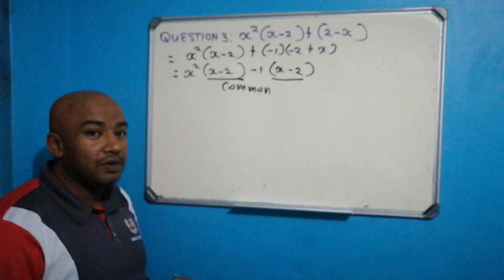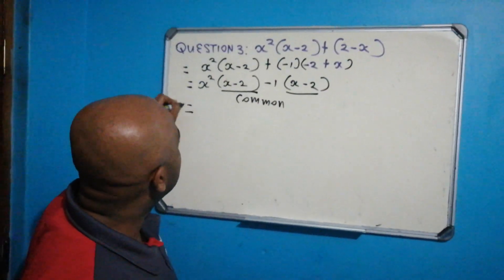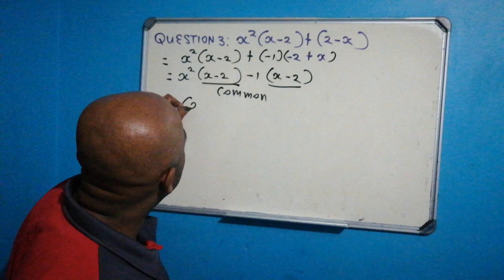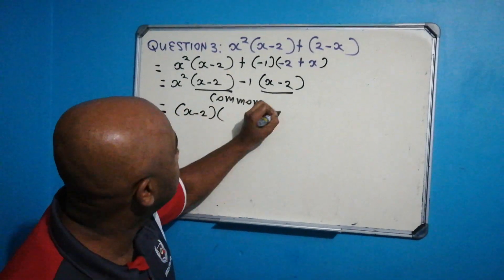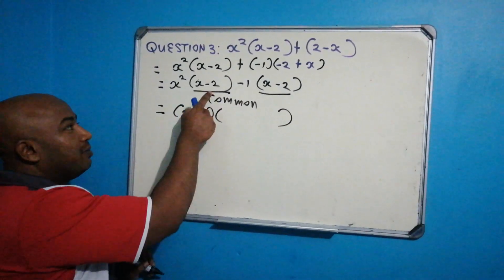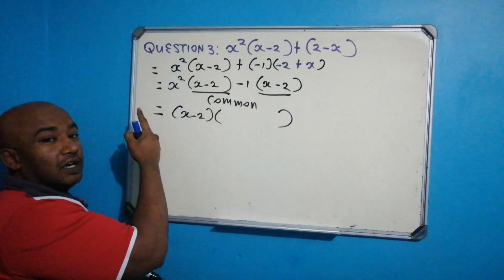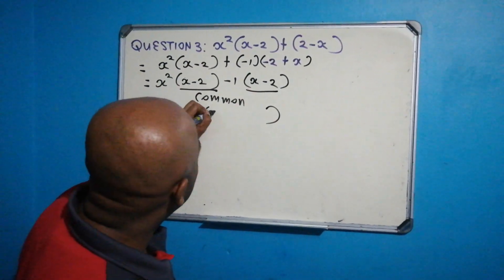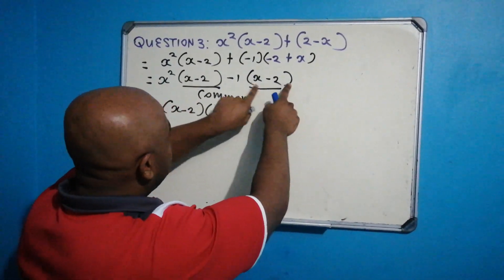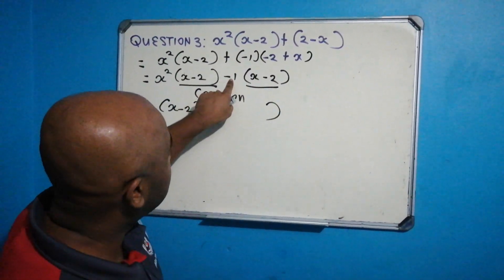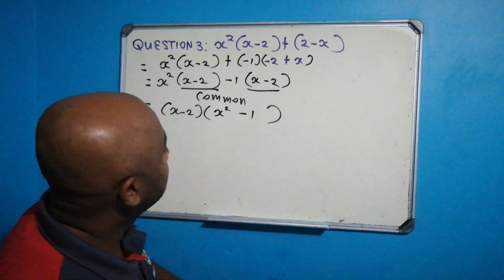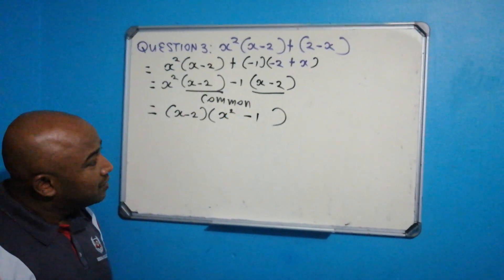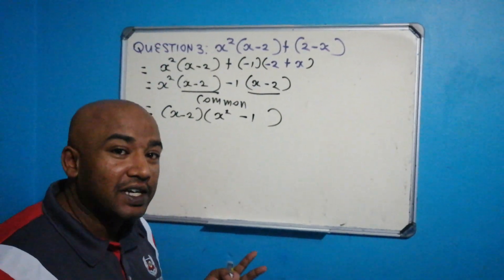Since x minus 2 is common, I can take out x minus 2 as a common factor. Pulling out x minus 2 and opening the bracket — what's left from the first term is x squared, and what's left from the second term is minus 1. So we have x minus 2 times the quantity x squared minus 1. We've factorized, but check: is it possible to factorize any further?